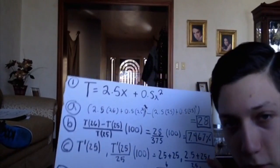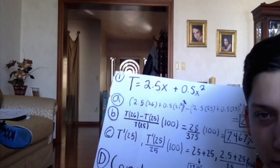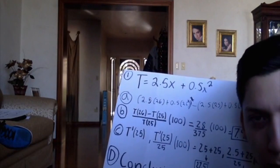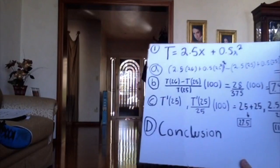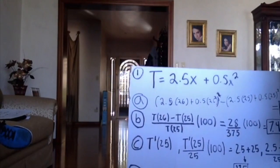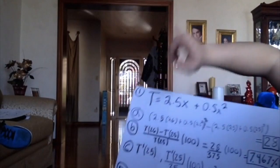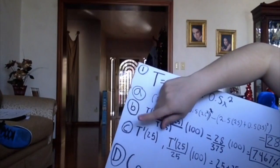Now in problem number c, we need to approximate the change and percent change in total stopping distance as speed changes from x25 to x26 miles per hour.